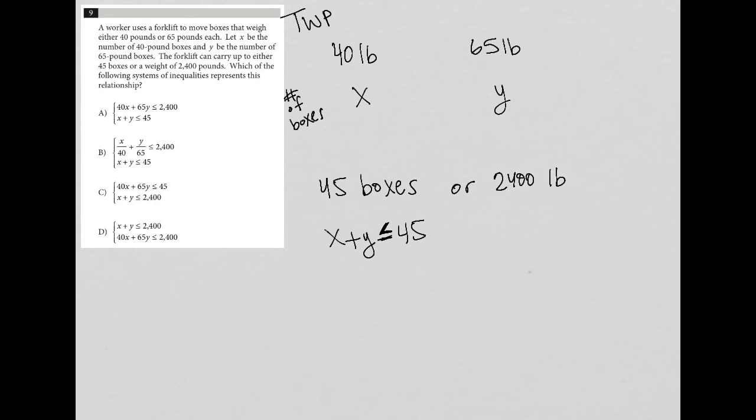...you know, the forklift, the number of 40 pound boxes plus the number of 65 pound boxes has to be less than or equal to 45 because that's the limitation for the forklift.